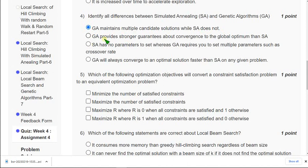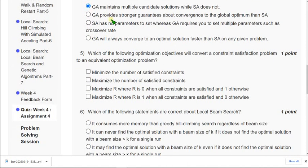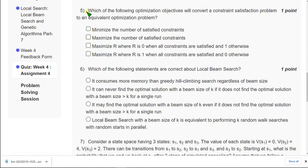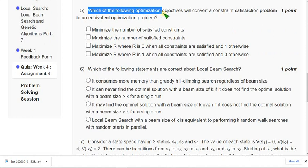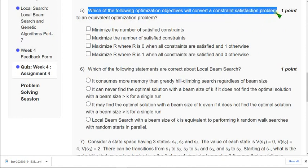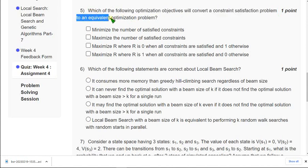Moving on to the fifth question: which of the following optimization objectives will convert a constraint satisfaction problem to an equivalent optimization problem?